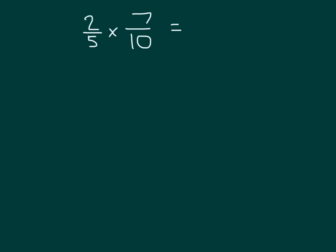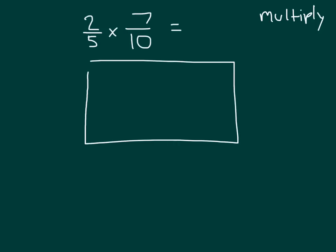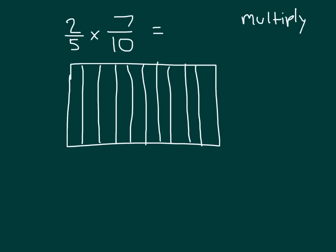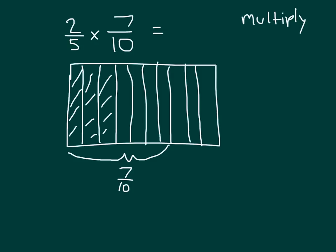Here I have another problem: two-fifths times seven-tenths. The instructions just say to multiply. Of course, I could draw an area model if it helped me. In this case, it would go two-fifths times seven-tenths — I would model seven-tenths first, and then take two-fifths of it. So let me go ahead and divide this into ten parts, and then we'll be looking at seven of those parts for seven-tenths. I'll shade those in so that you can see that we're looking at seven of those tenths.